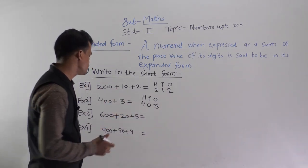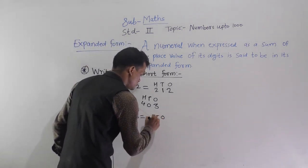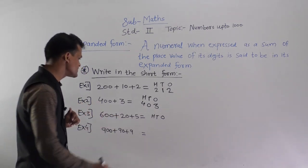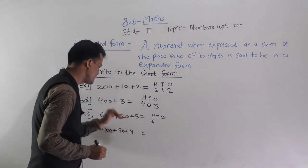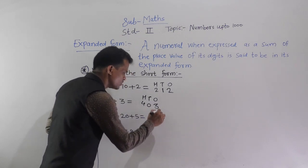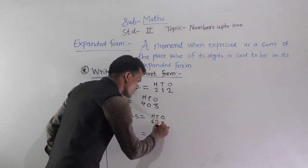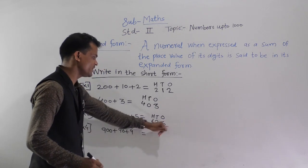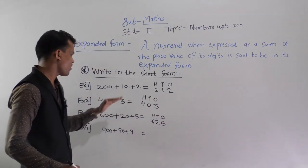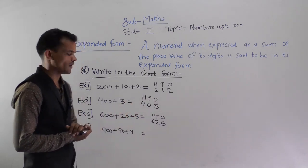Next: 600 plus 20 plus 5. How many hundreds? 600. How many tens? 20 means 2 tens. How many ones? 5 ones. So 625 is the short form of 600 plus 20 plus 5.